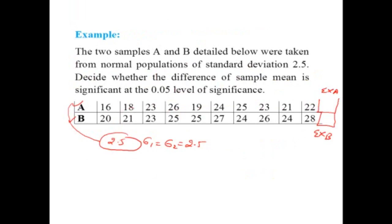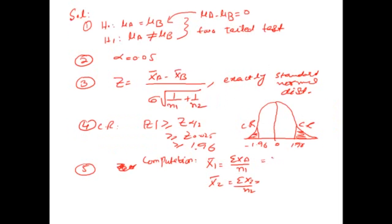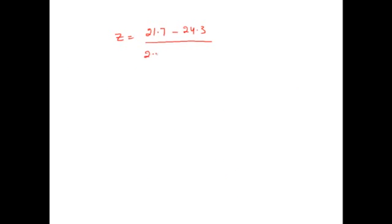Both samples have 10 values each, so N1 equals N2 equals 10. Dividing the summation by N gives us the sample means: mean A equals 21.7 and mean B equals 24.3. Substituting into Z: (21.7 minus 24.3) divided by (2.5 times square root of (1/10 plus 1/10)), which gives minus 2.6 divided by 1.118, and which equals minus 2.33.